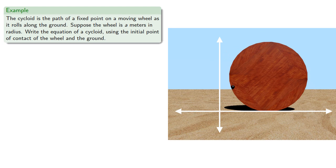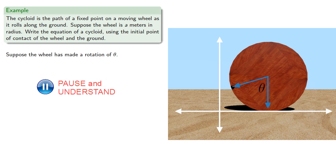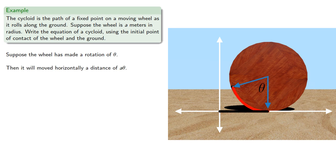Suppose the wheel has made a rotation of θ. That means the central angle has measured θ. Now because the wheel is rolling along the ground, the arc length has to equal the distance traveled. This means it will have moved horizontally a distance of aθ, that's the arc length. And the point will have been rotated through an angle of θ.